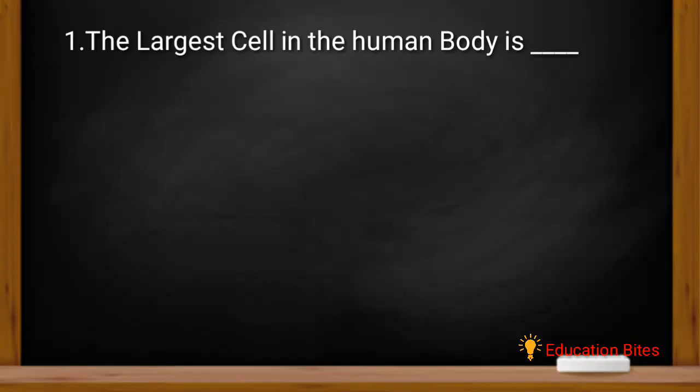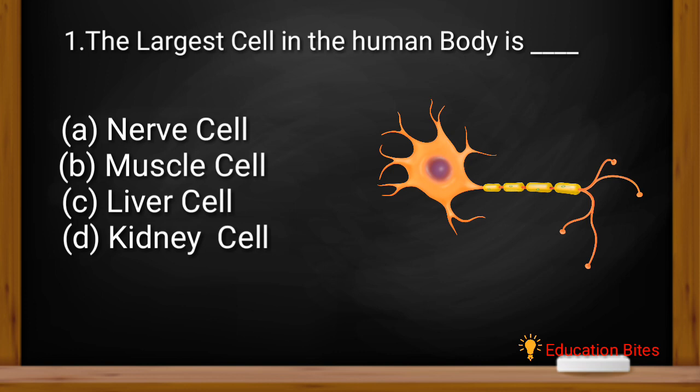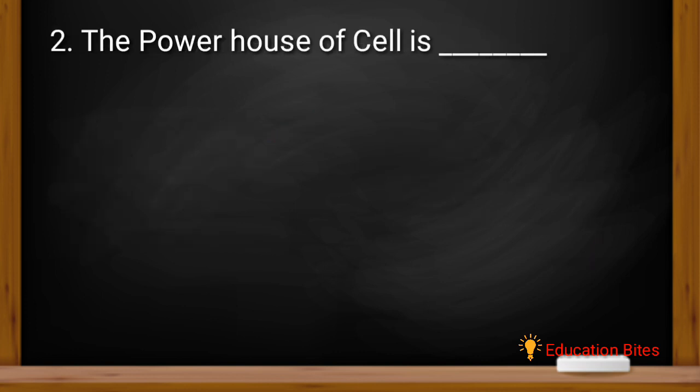So here is the first question. The largest cell in the human body is? The biggest cell in the human body is? Which one is the biggest cell in the human body? Nerve cell, muscle cell, liver cell or kidney cell? So the answer is A, nerve cell.